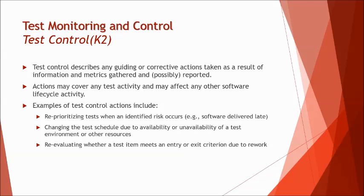Some examples of test control actions include: reprioritizing tests when an identified risk occurs; changing the test schedule due to availability or unavailability of a test environment or resource — for example, if requirements are not available we can reschedule to a later date, or if available early we can pre-schedule so the testing team gets involved sooner; and re-evaluating whether a test item meets entry or exit criteria due to rework, such as when code is modified.